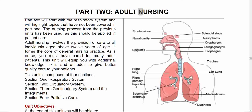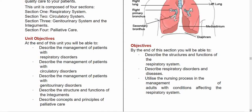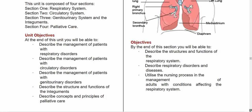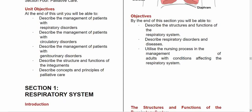On the display you can see a diagrammatic image showing the organ composition of the respiratory system, including the frontal sinus, nasal cavity, epiglottis, the two lungs, primary bronchias, secondary bronchias, mediastinum, sphenoidal sinus, nasopharynx, oral pharynx, laryngopharynx, and the esophagus. The objectives include describing the management of patients with respiratory, circulatory, genital urinary, and integumentary disorders, as well as palliative care principles.